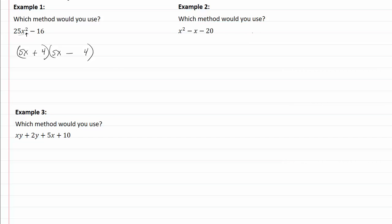In example two, which method would we use? Well, if I look at this, I have three terms, so that means I'm doing trial and error. It is a trinomial, so again I'm putting two sets of parentheses down.